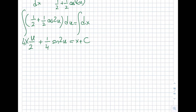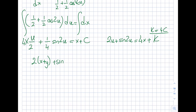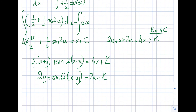Multiplying through by 4: 2u + sin(2u) equals 4x + k where k = 4C. Substituting u = x + y: 2(x + y) + sin(2(x + y)) equals 4x + k. Simplifying: 2y + sin(2(x + y)) equals 2x + k is the general solution. An explicit solution for y is not obtainable here. This concludes the substitution segment; the next topic will be linear and non-linear models.